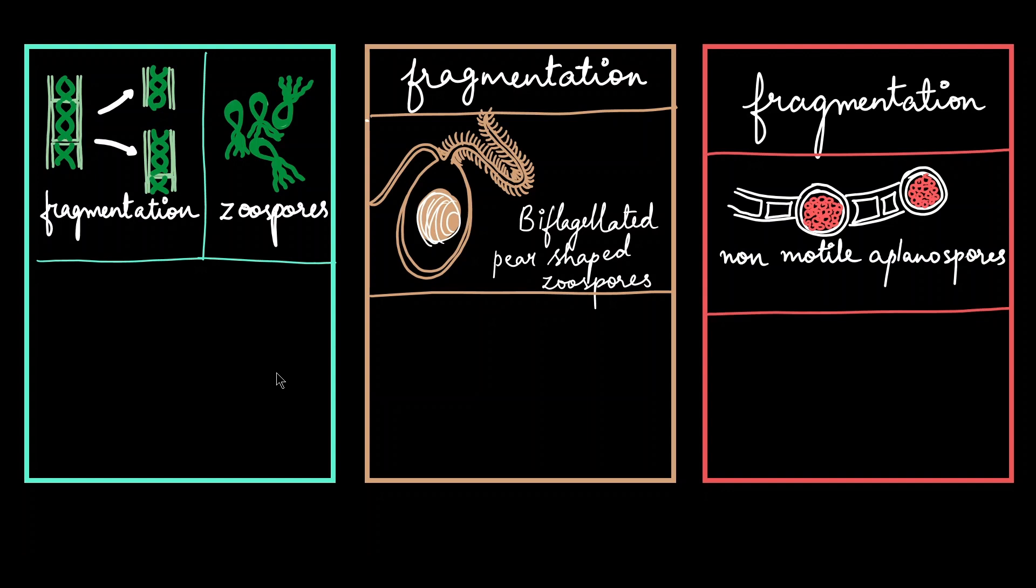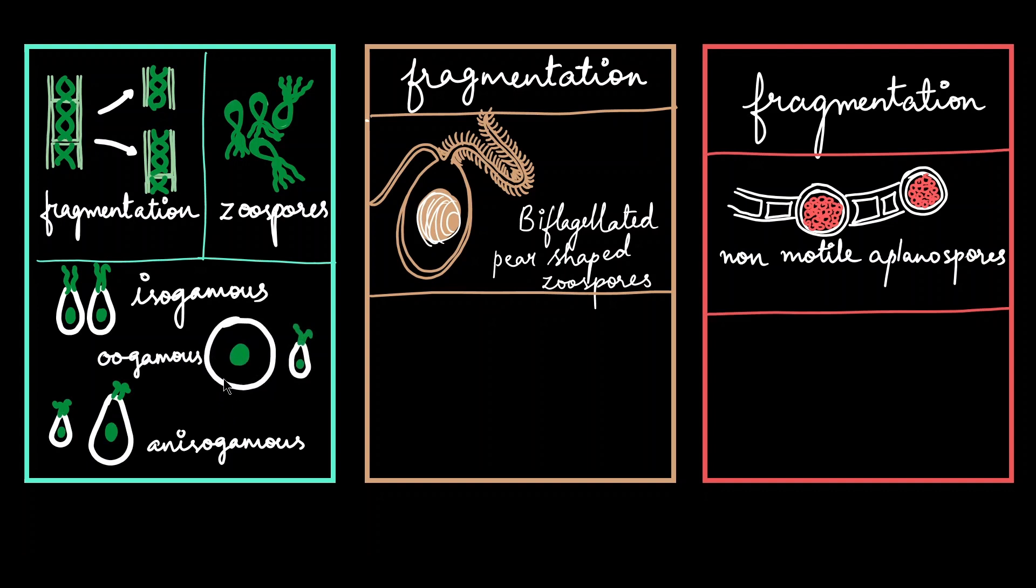All three types of gametes are seen here in all the three groups as well. So we have the isogamous, anisogamous and the oogamous. So here we have a female which is bigger and non-motile, a male that is smaller and motile. A similar oogamous gamete is seen in brown algae.